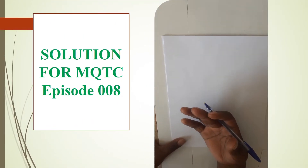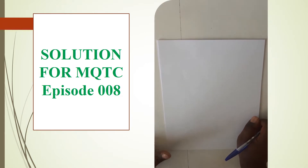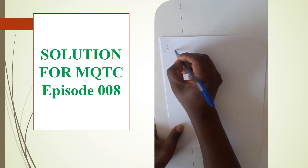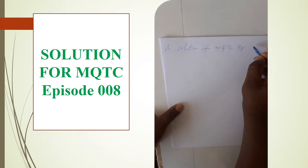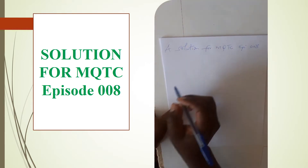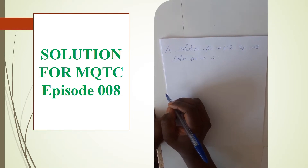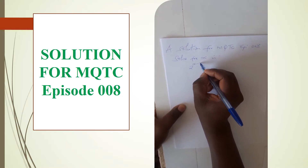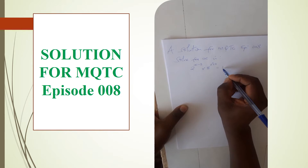I want to welcome you to MQTC 009, but remember we are supposed to give the solution for MQTC episode 008. So I want us to go through the solution. Solution for MQTC episode 008: the equation was — solve for x — and you were given the equation as 2 raised to power x minus 3, times 8 to the power x squared plus 2, is equal to 128.